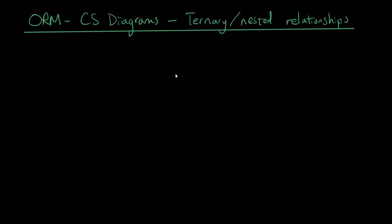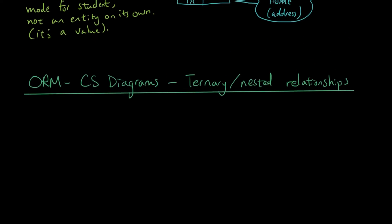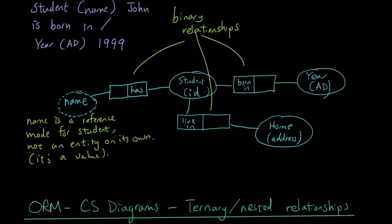Let's have a look at the last lesson where we talked about binary relationships. They are relationships that are only linked to two entities. For example, student was born in year - there are only two entities coming out of this relationship.